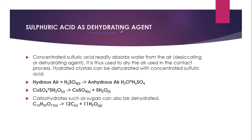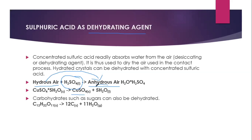Sulfuric acid as a dehydrating agent. We will see cases where sulfuric acid acts as a dehydrating agent. A dehydrating agent is a substance that removes water from air or a compound. Hydrous air is converted into anhydrous air with the help of sulfuric acid, removing the water molecule. Copper sulfate pentahydrate is converted into copper sulfate, removing 5 molecules of water. Carbohydrates such as sugar are also dehydrated — sugar reacts with sulfuric acid to give carbon and water.